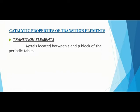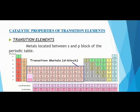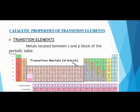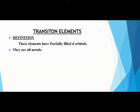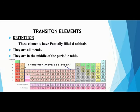Transition elements are metals located between the s and p block of the periodic table. If you look at this periodic table, right in the middle are the transition elements between the s block and the p block — they constitute the d block and are called transition metals. The elements which have partially filled d orbitals are called transition elements; they are in the middle of the periodic table, right between the s and p block.